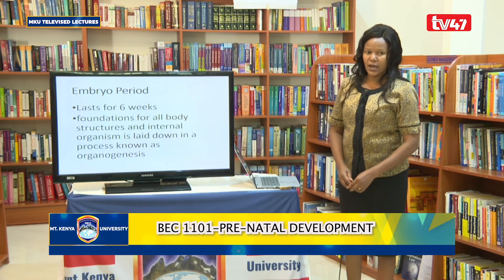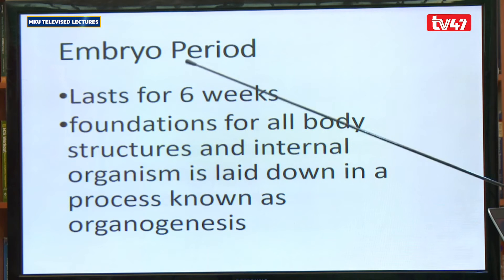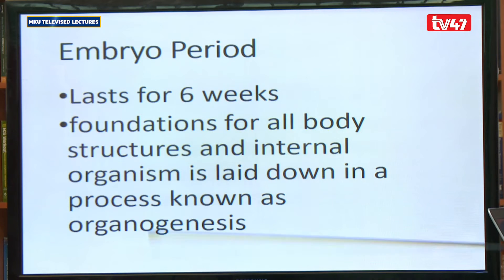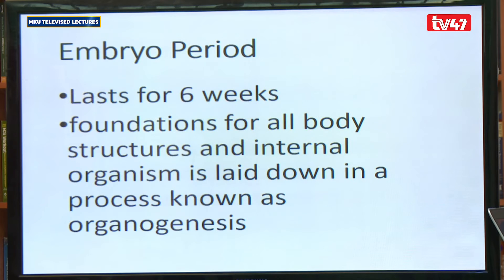So we see the foundation for all those structures being formed during the very first stage of development — the zygote period — which lasts for only two weeks. Then we move on to the next period, which is referred to as the embryo period. This period lasts for six weeks, meaning the stage lasts from the second week to the eighth week. It is a very crucial stage because of the main processes that happen during it.